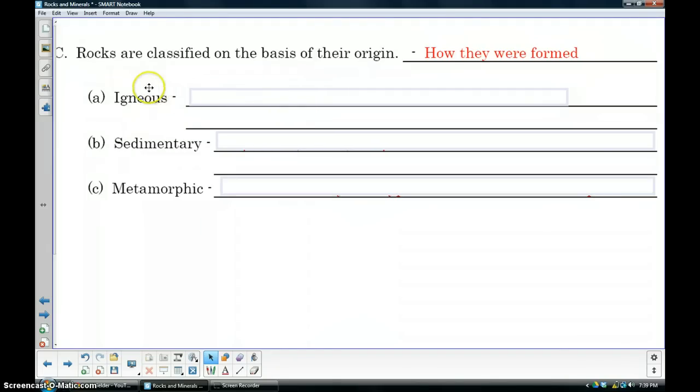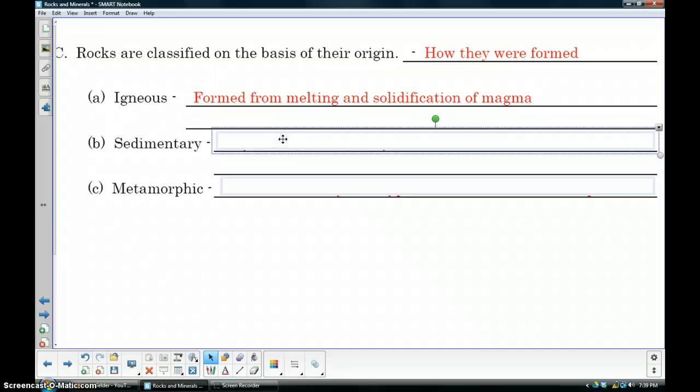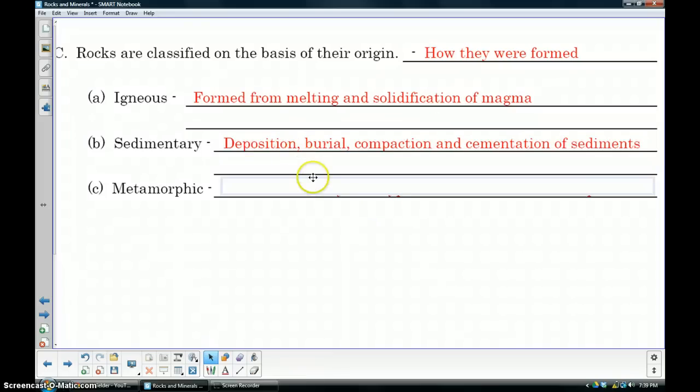We base rocks on how they're formed. Igneous rocks form differently than sedimentary and metamorphic. From 8th grade you should remember: igneous rocks are formed from melting and solidifying magma; sedimentary rocks are made from deposited material, buried, compacted, and cemented together; and metamorphic rocks are made by taking any rock form and putting it under extreme heat and pressure, which changes the crystalline structure.